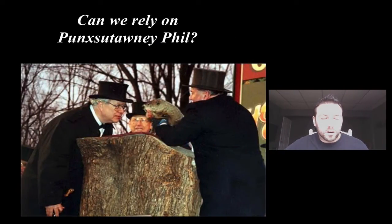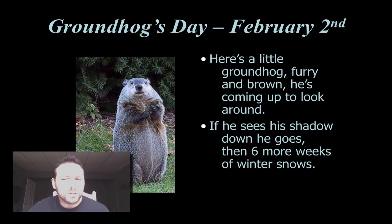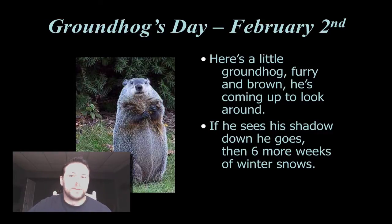Do we rely on creatures such as Punxsutawney Phil, the groundhog, to say whether or not we're going to have winter for another 6 weeks? There's a little rhyme that goes with that. Here's a little groundhog, furry and brown. He's coming up to look around. If he sees his shadow, down he goes, then 6 more weeks of winter snows. So February 2nd, we see Punxsutawney Phil come up, along with a number of other local groundhogs. They all do this. Within the news, you'll see each area's got different ones. He just happens to be the most famous, but do we rely on him?